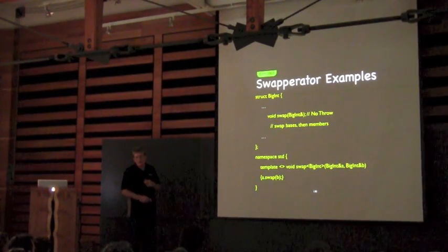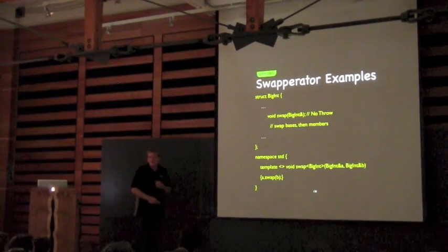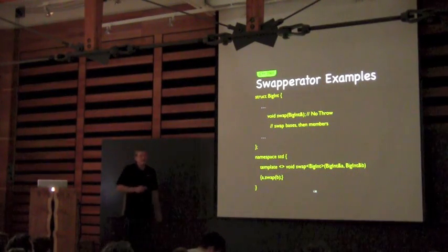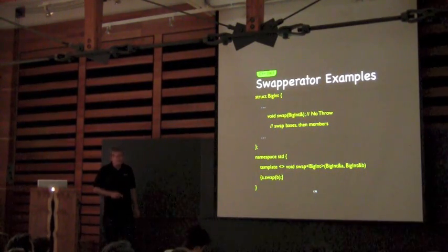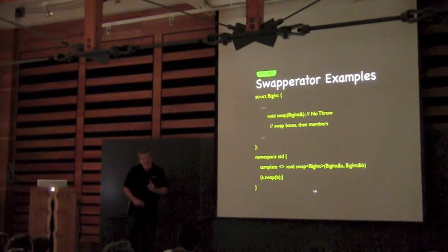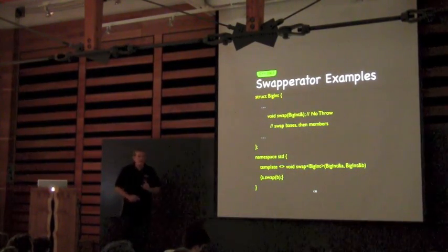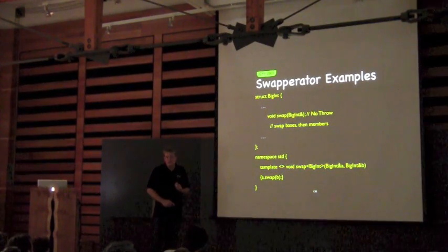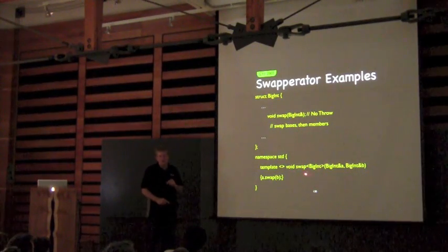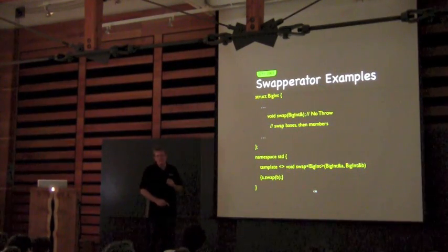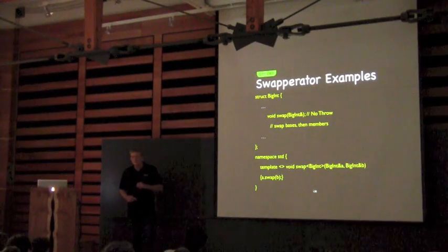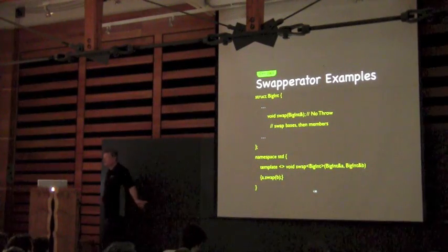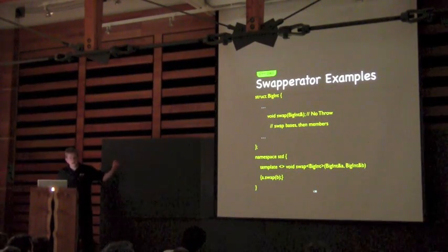Here's our big int class. We've written a member function that takes a non-const reference to big int which does the swap by swapping the bases and the members. And in the standard namespace, we write a swap that takes two big ints by non-const ref, and all it does is call the member swap. Now, I just put something in the standard namespace — am I allowed to do that? Yes, I chose my wording carefully. I said I put something in the standard namespace; I didn't add something new. What I've done is specialized a template that was already in the standard namespace, for a user-defined type.